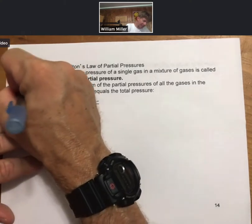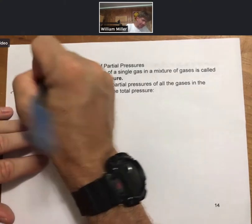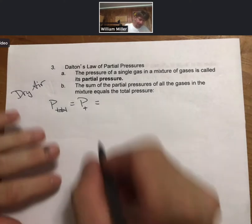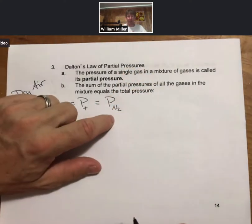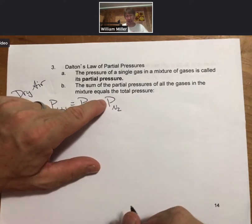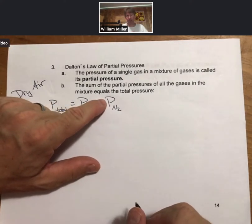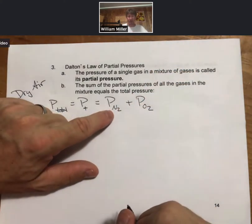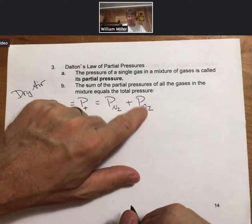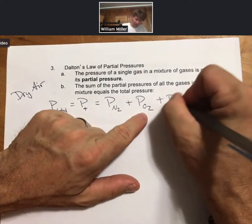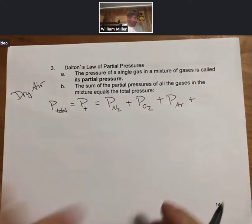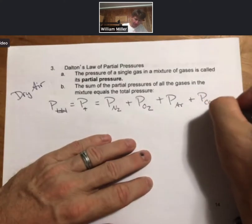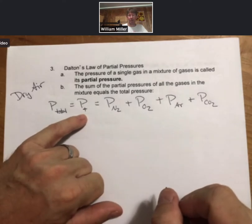So let's do this for dry air. From the previous page, dry air was made up of four gases, and each of those gases has a pressure which is called a partial pressure. So the partial pressure of nitrogen plus the partial pressure of oxygen plus the partial pressure of argon plus the partial pressure of carbon dioxide equals the total pressure for the mixture.